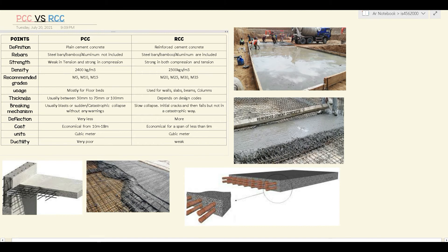When it comes to thickness, PCC is usually between 50 mm to 75 mm — though 100 mm is also used in some cases, 50 to 75 mm is most common. For RCC, thickness depends on the design codes, so it can differ. For columns it can be 9 inches, 12 inches, 15, or 18 inches — there's no specific fixed value; it depends on design codes.